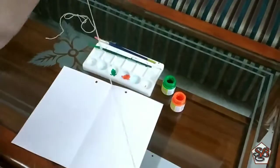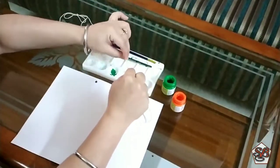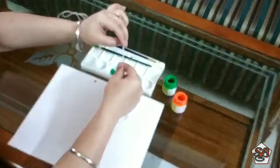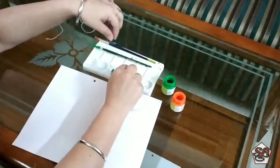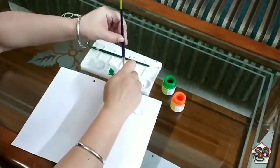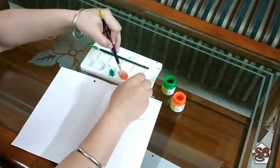And then we dip the thread in the color nicely like this. Dip it nicely, a nice amount of thread in the color so that our entire thread gets covered.